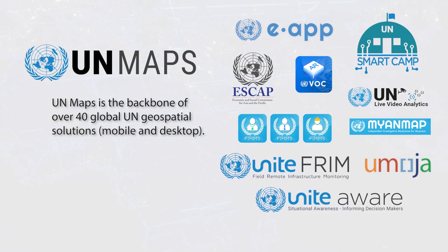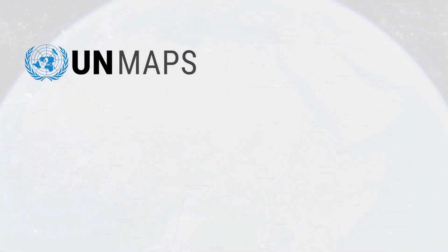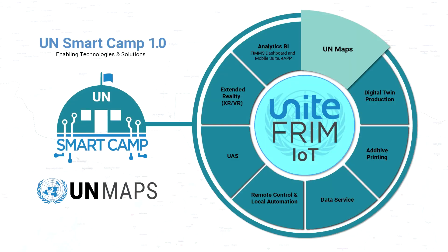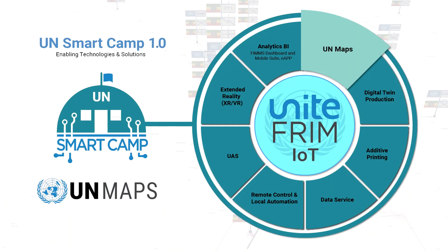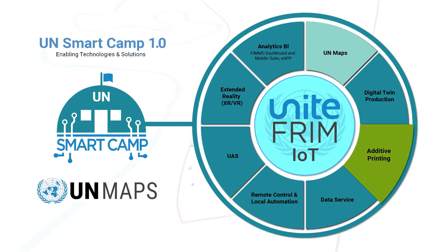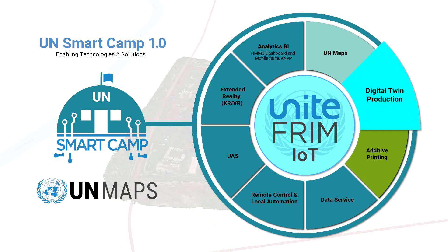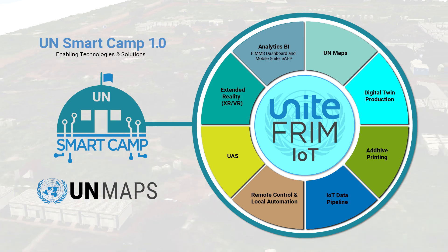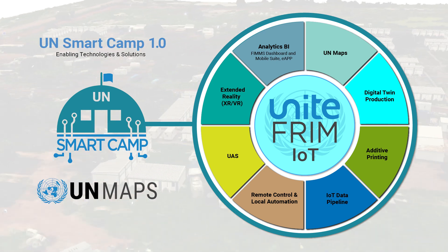UN Maps is a foundational system for enterprise applications and the backbone for UN global geo-enabled solutions. It is also a key component in the UN Smart Camp 1.0 initiative, alongside additive 3D printing, digital twin production, extended reality, and other enabling technologies and solutions.